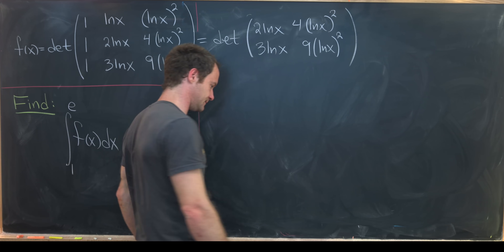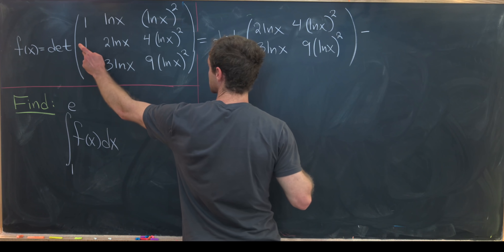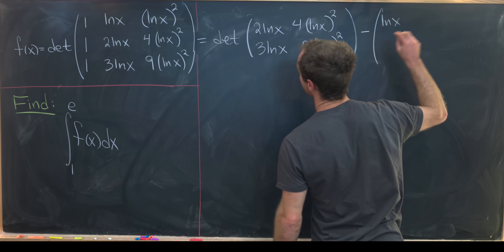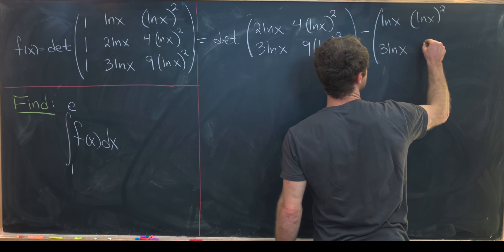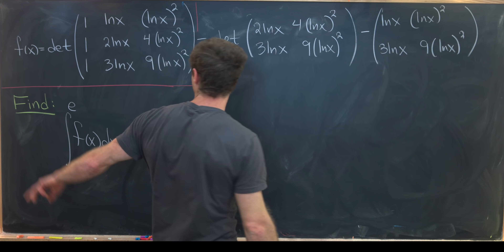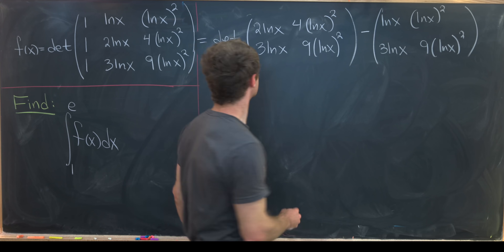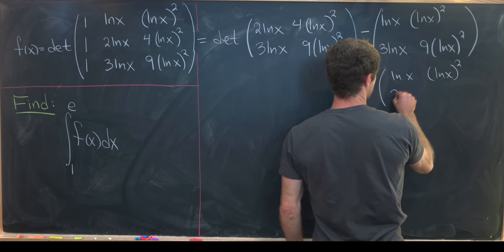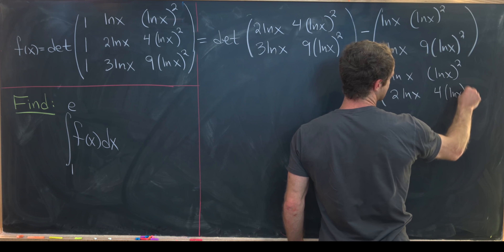Continuing down the first column, signs alternate. We subtract 1 times the determinant of the submatrix with entries ln(x), (ln x)², 3·ln(x), and 9(ln x)². Then finally, from crossing the first column and third row, we add the determinant of the submatrix with entries ln(x), (ln x)², 2·ln(x), and 4(ln x)².